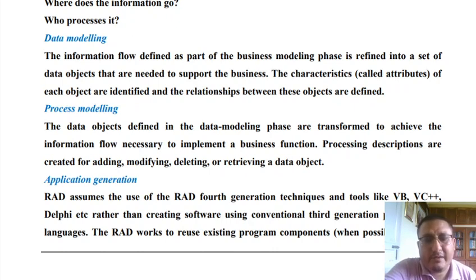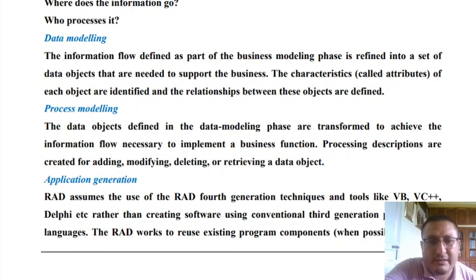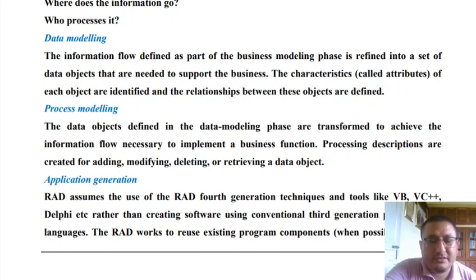The next phase is the Process Modeling Phase. Once the objects have been identified, attributes listed, and an idea about the methods drawn, we need to implement all these methods. In the Process Modeling Phase, the data objects defined in the Data Modeling Phase are transformed to achieve the information flow necessary to implement business functions — methods like addition, modification, deletion, or retrieval of data. Then comes Application Generation.